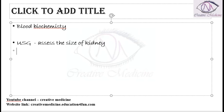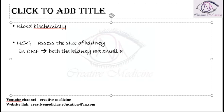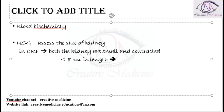In chronic renal failure, both kidneys are small and contracted — around less than 8 cm in length. If the size of the kidney is less than 8 cm, it is said to be a contracted kidney, which is one of the most common findings of chronic renal failure.